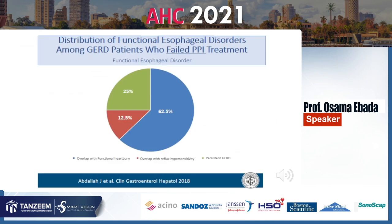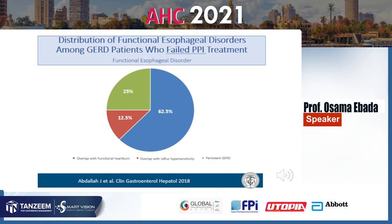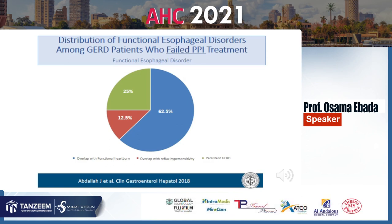Another study shows that functional heartburn is more likely if the patient has already failed PPI therapy. In failed PPI patients, about 60-something percent have functional heartburn and about 12% have reflux hypersensitivity — meaning roughly 75% are accounted for, leaving only about 25% with refractory GERD.